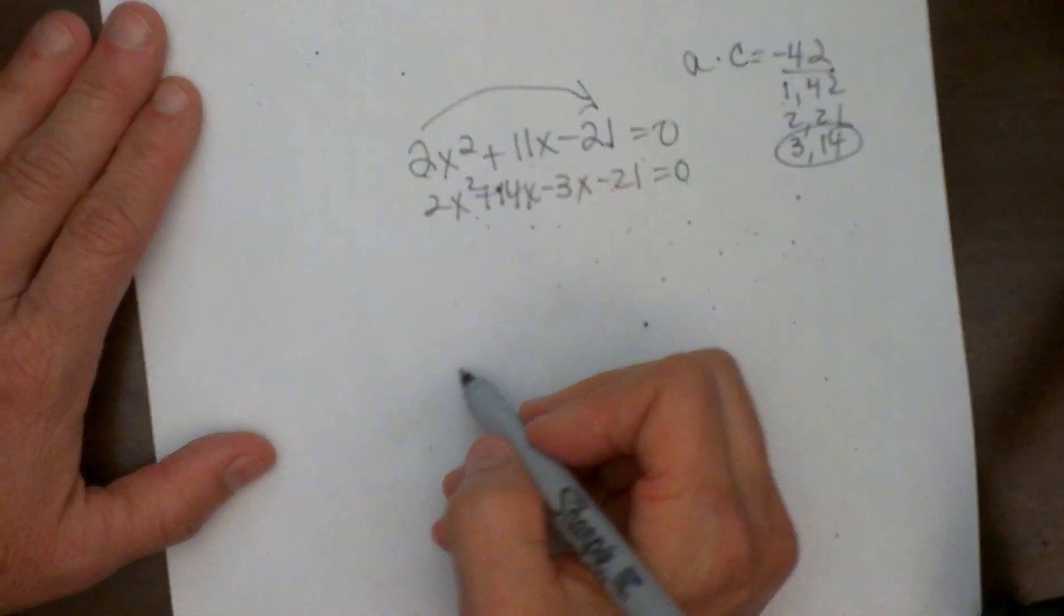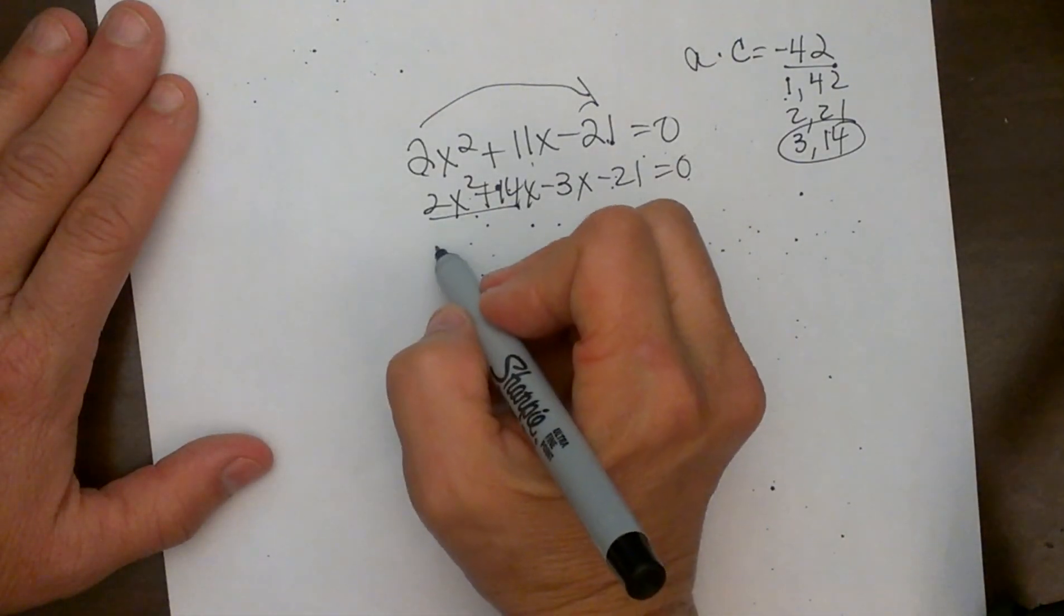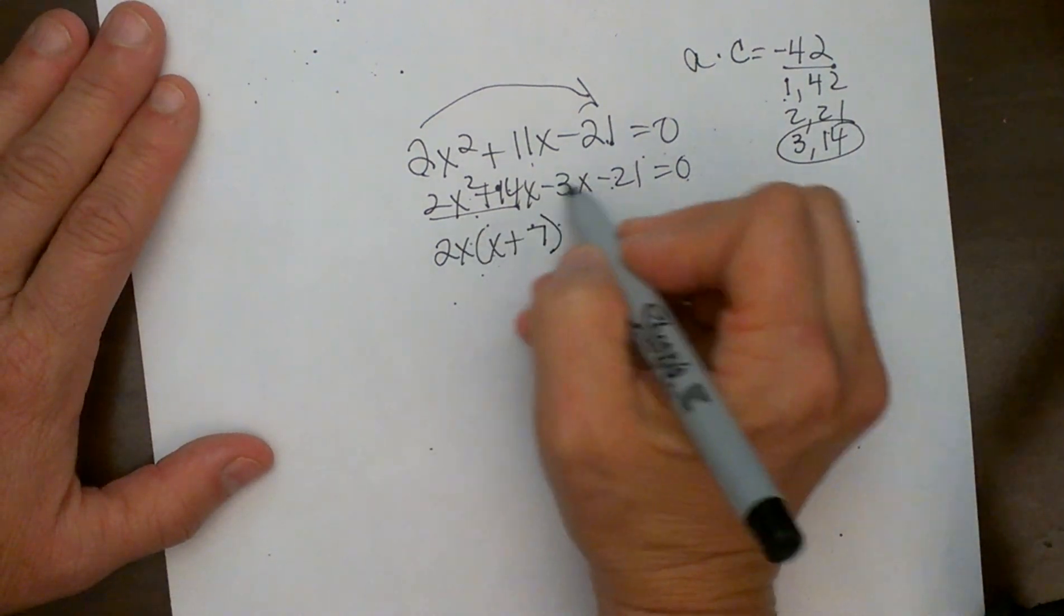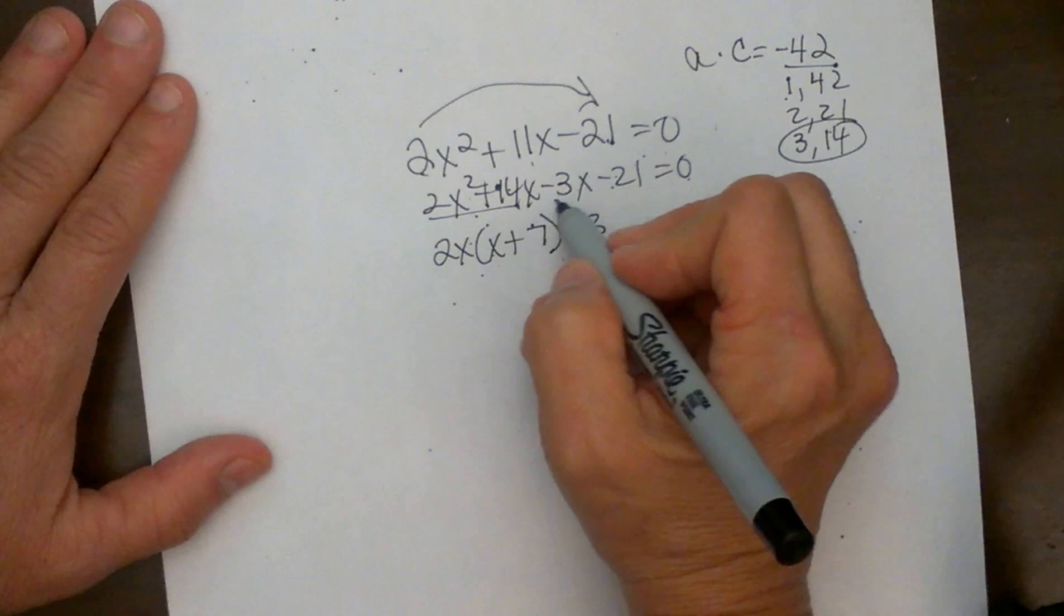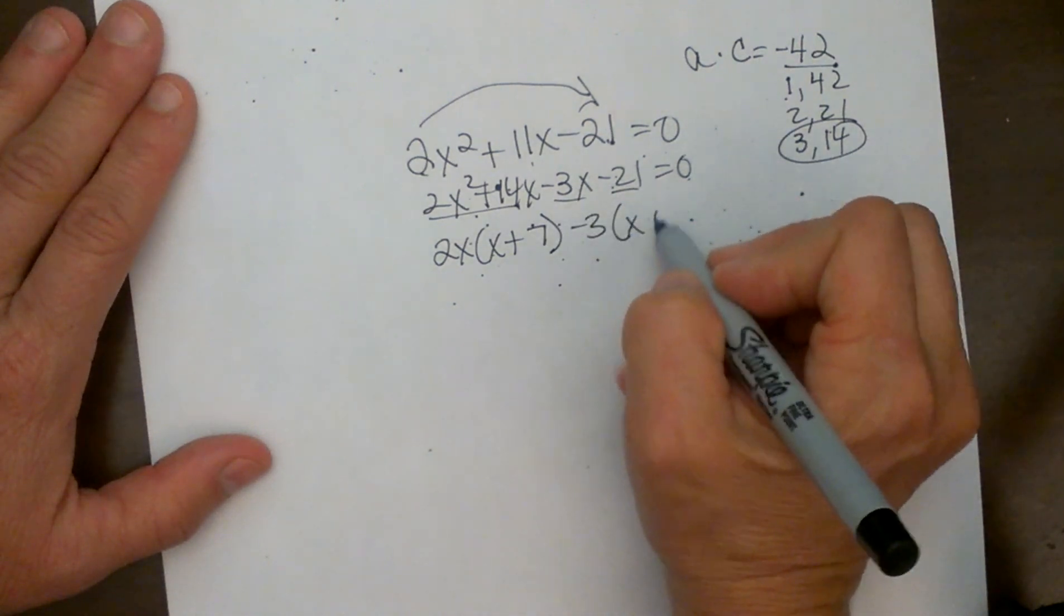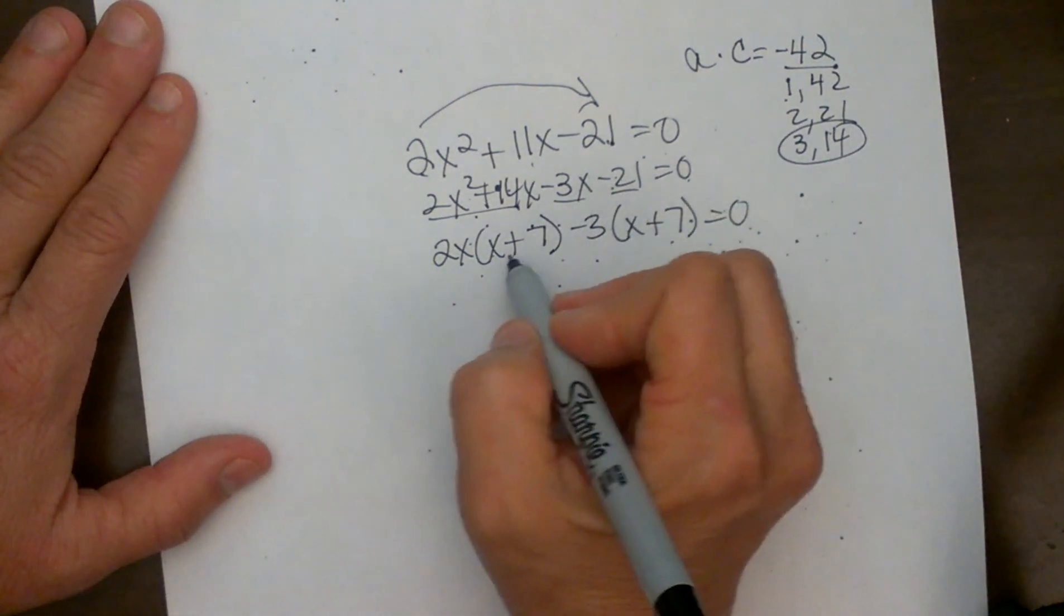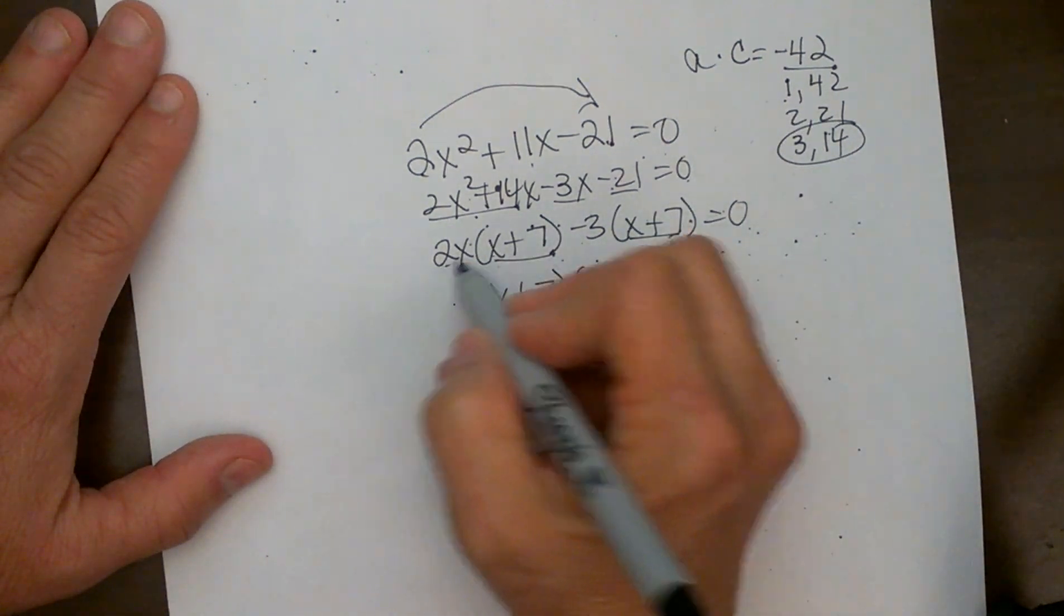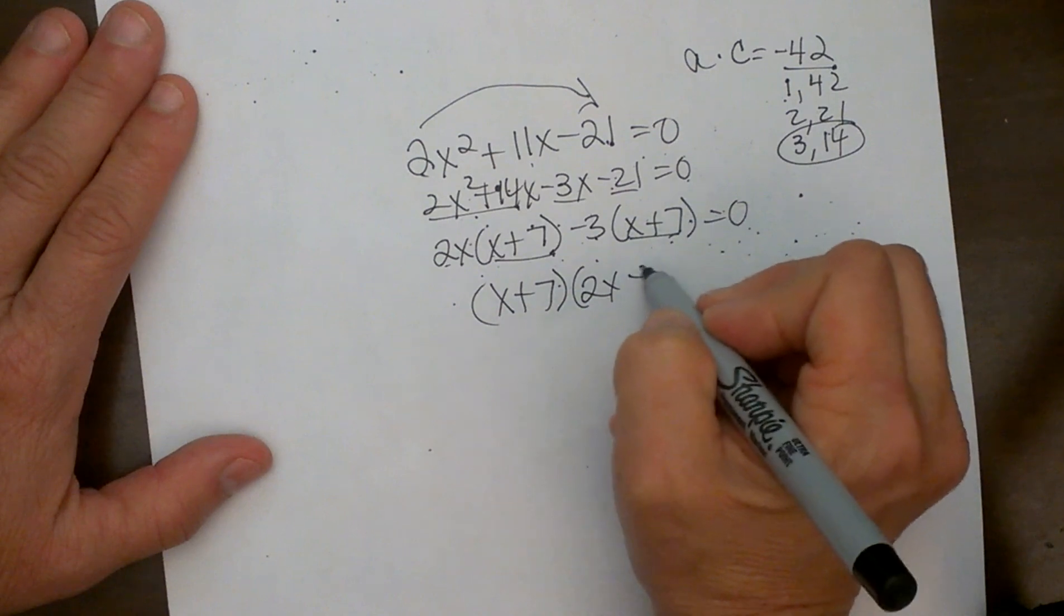And now I am going to factor by grouping. So let's group the first two. Factor out a two x and that leaves me with x plus seven. Factor out a negative three out of the back. That leaves me with x plus seven. And so I am going to factor out my x plus sevens and I am left with two x minus three.